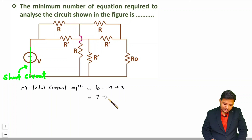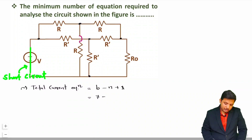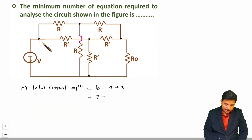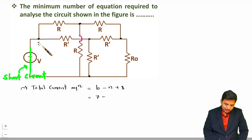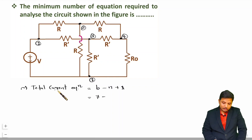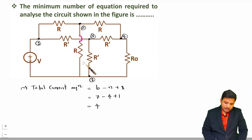Now we need to count the nodes. You can observe there appear to be 5 nodes, but students often make the mistake of counting the nodes on either side of the voltage source as separate. Since the voltage source is short-circuited, those two nodes merge into one common node, giving a total of 4 nodes: nodes 1, 2, 3, and 4.